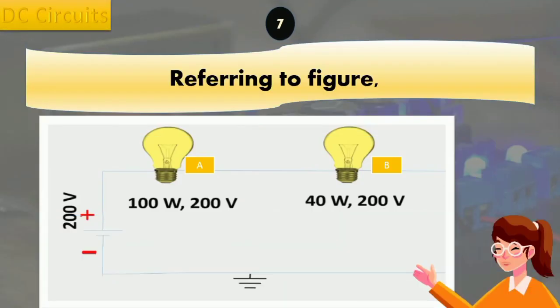Coming back to our solution, the 40 watt bulb will dissipate more power and glow brighter than the 100 watt bulb.